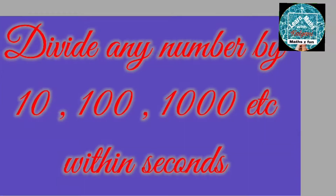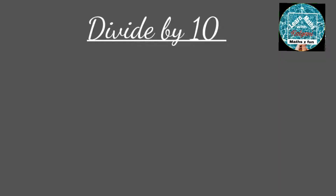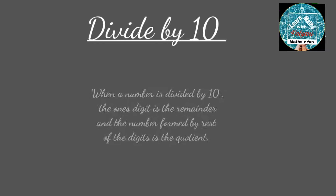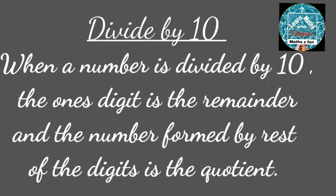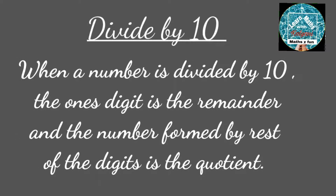How to divide any number by 10, 100, 1000, etc. within seconds. When a number is divided by 10, the 1's digit is the remainder and the number formed by the rest of the digits is the quotient.